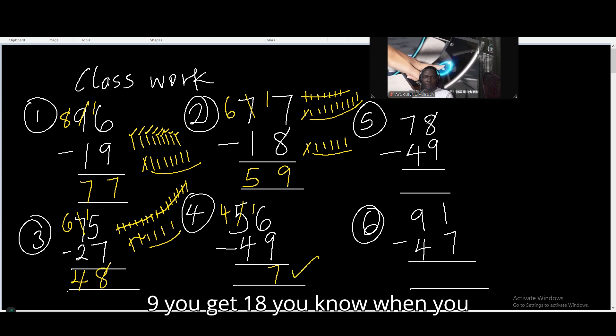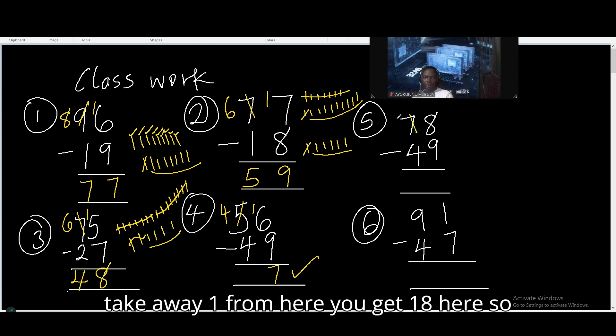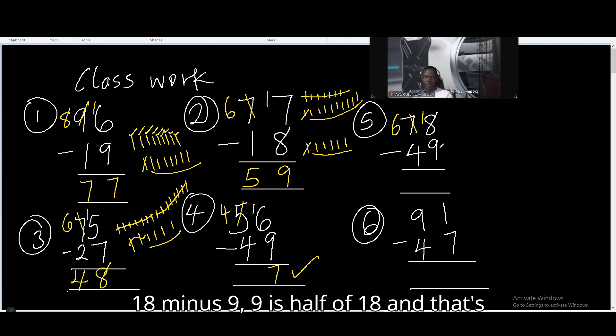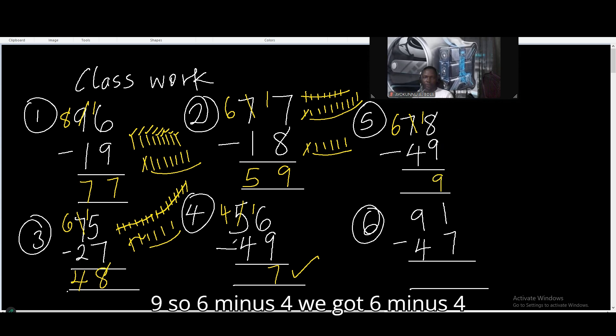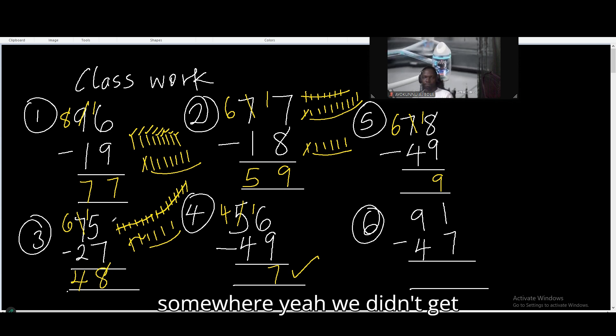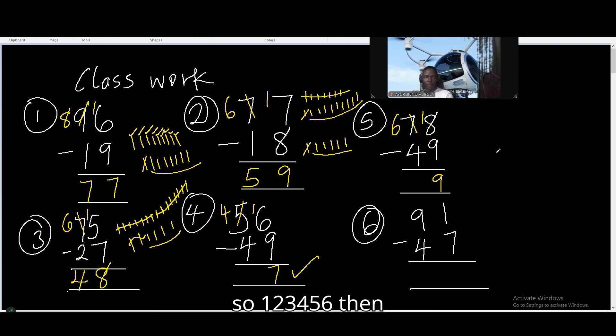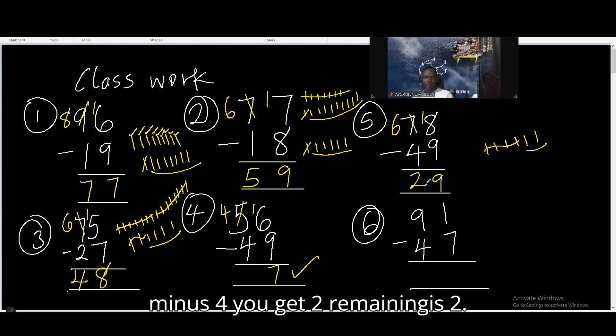Then 8 and 9. You get 18. You know, when you take away 1 from here, you get 18 here. So 18 minus 9. 9 is half of 18, and that's 9. So 6 minus 4. We got 6 minus 4 somewhere. So 1, 2, 3, 4, 5, 6. Then minus 4, you get 2 remaining. This is 2.